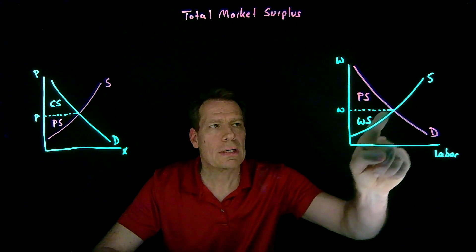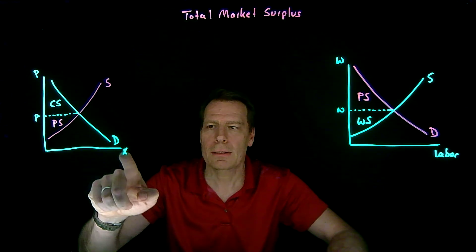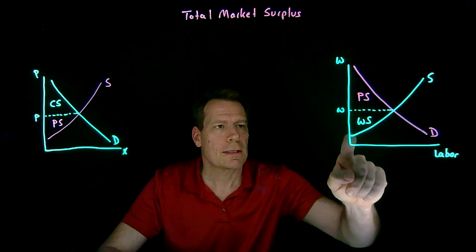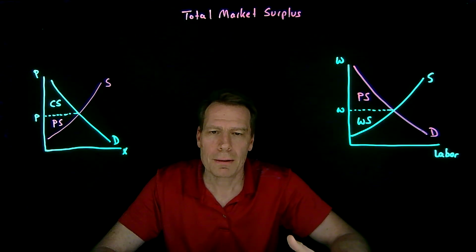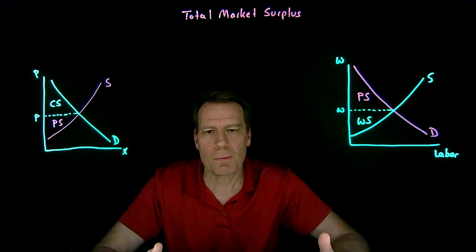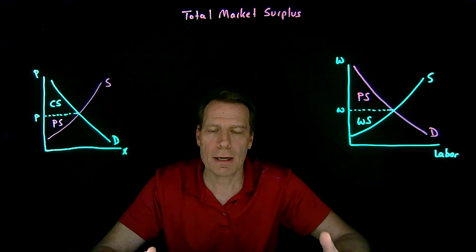So the green curves in the two pictures, the demand curve in the picture for goods, the supply curve in the picture for labor, come from the consumer model where we have to be careful about whether income effects are important enough for us